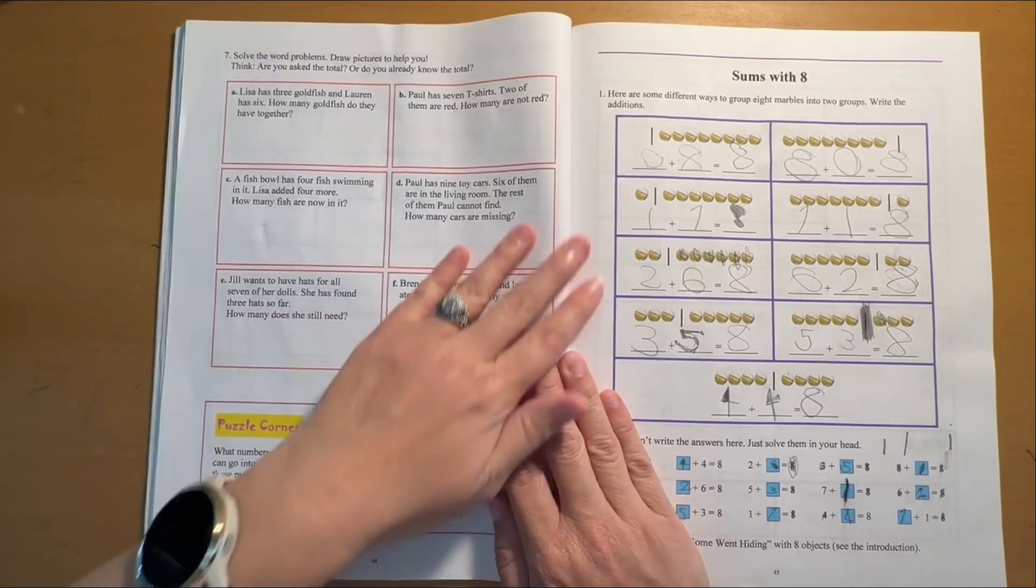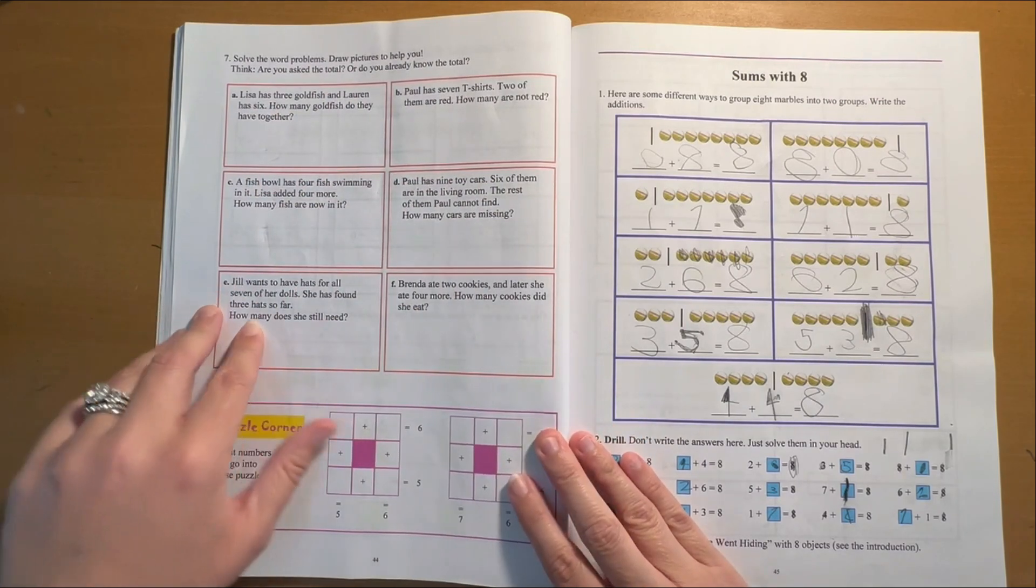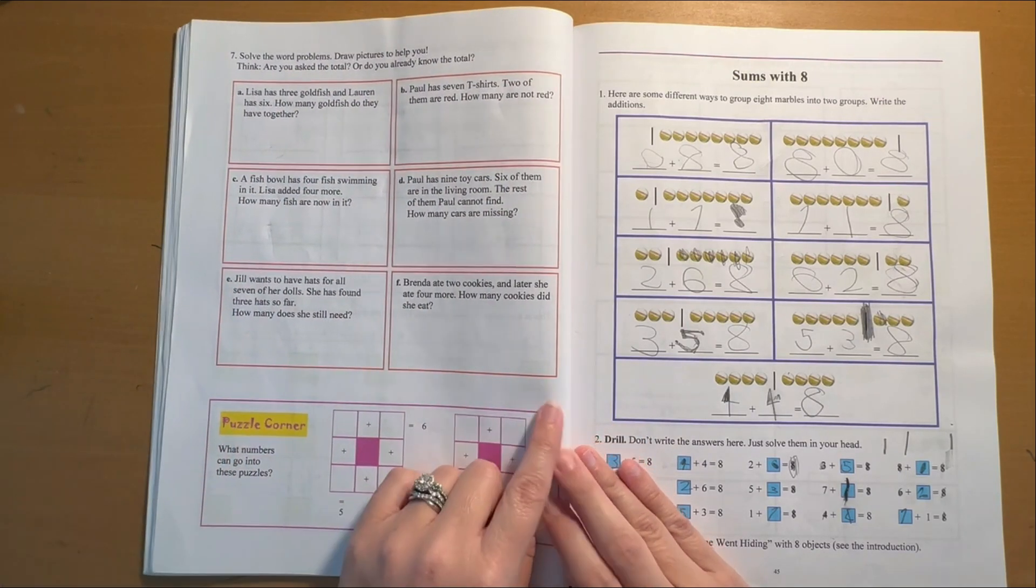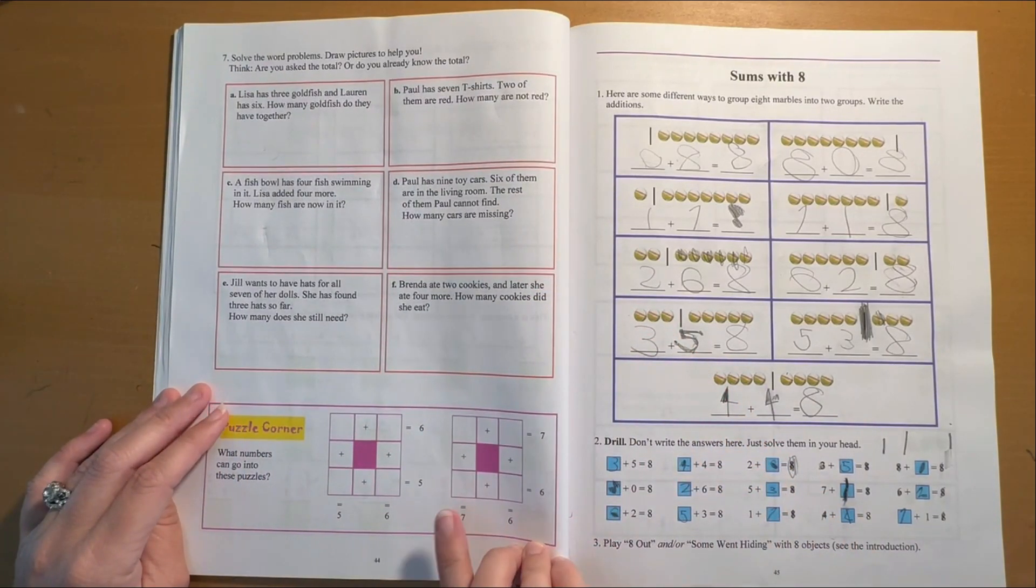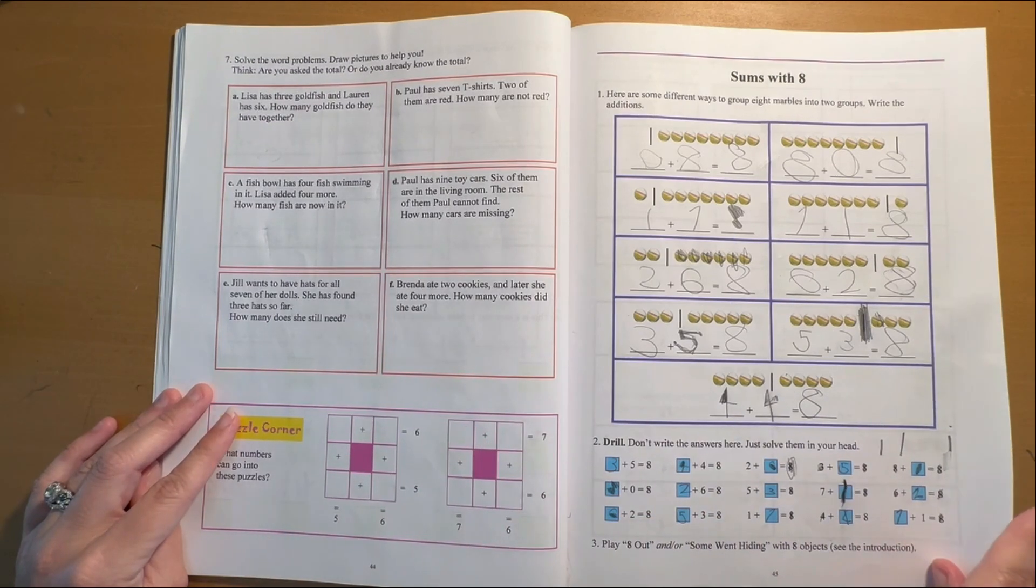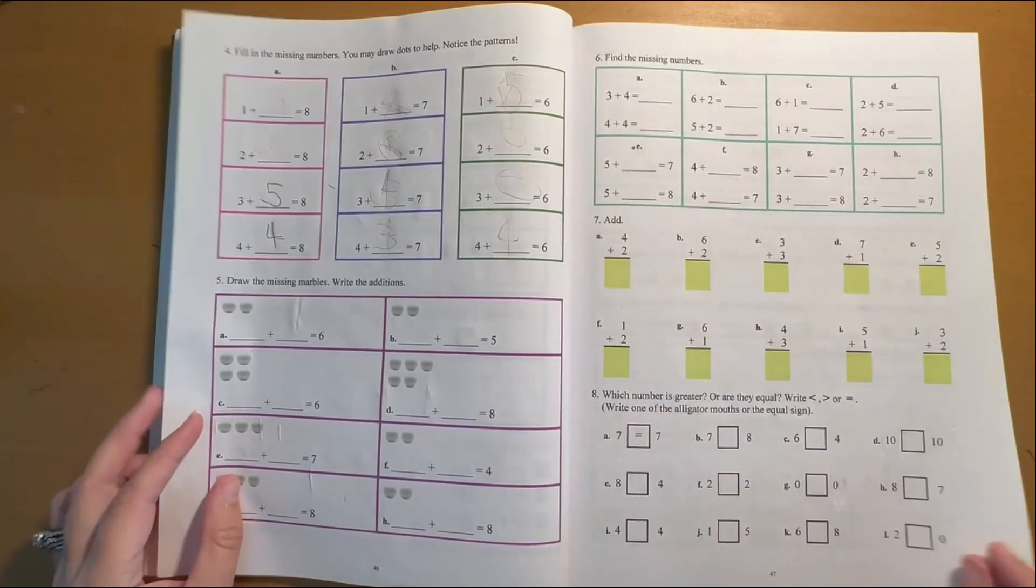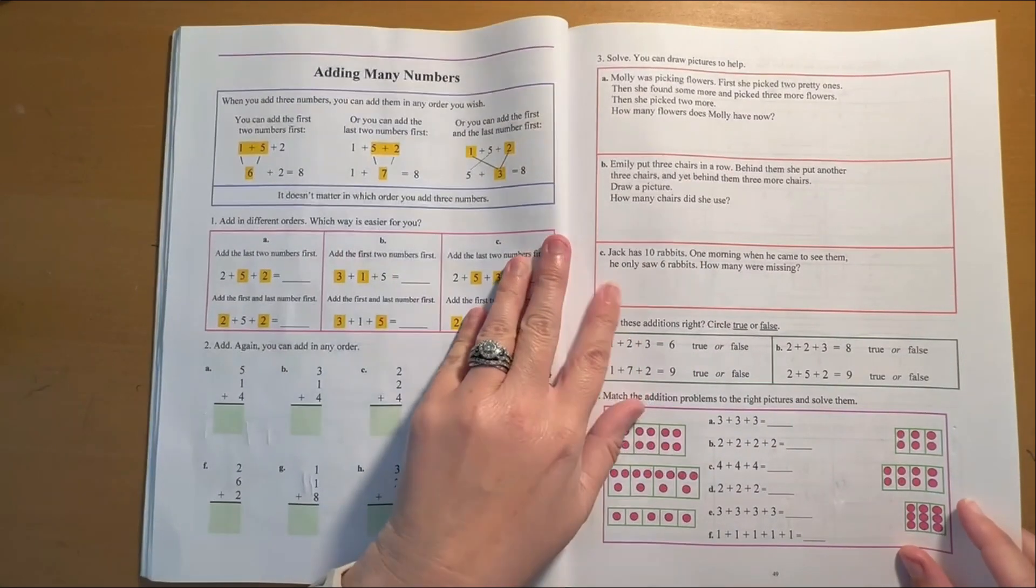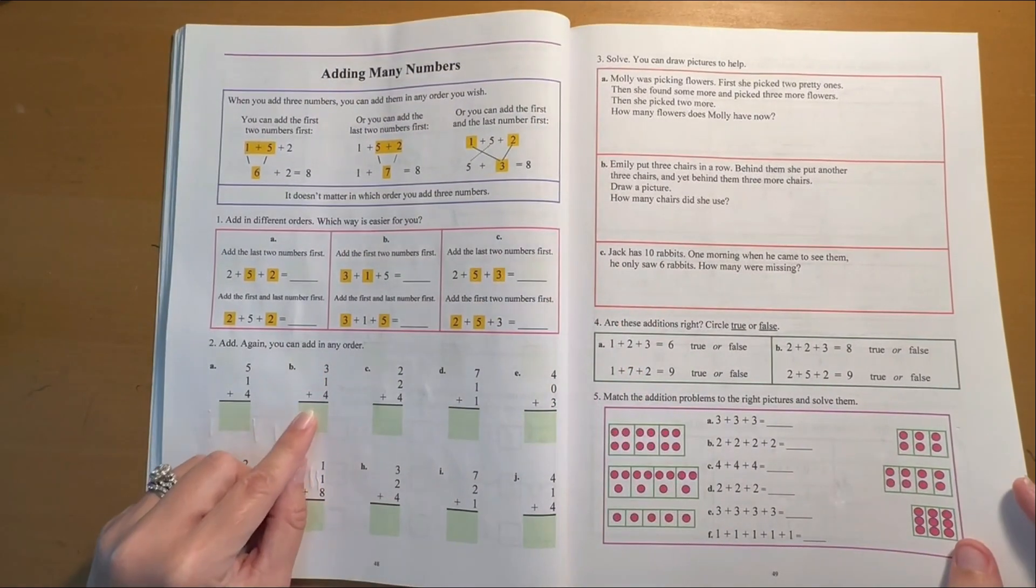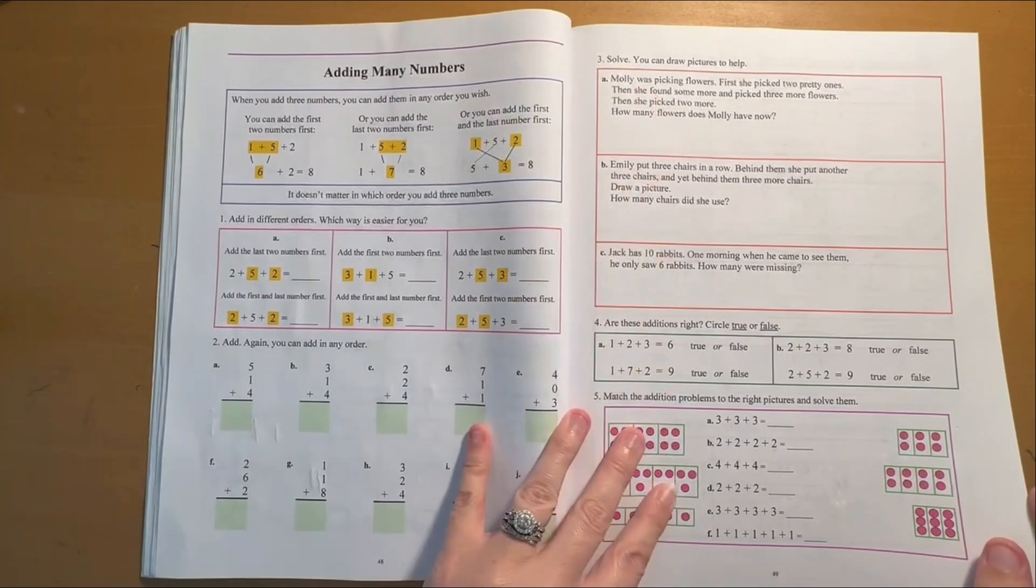Sums with seven. Now we're going to introduce some word problems, which kids tend to need a lot of practice on. Math Mammoth also includes these little puzzle corners. So if the kids want a challenge, they can do this or you can skip it. Sums with eight. Adding many numbers. So here we go. We're already adding three small numbers.